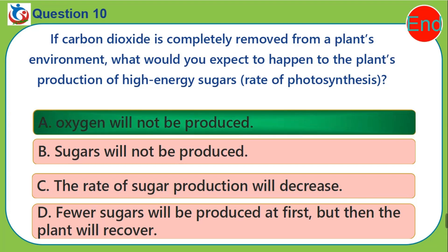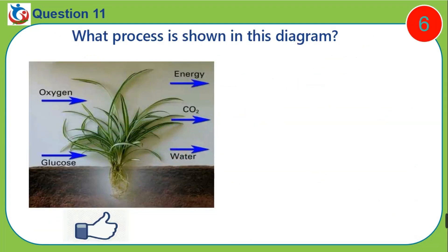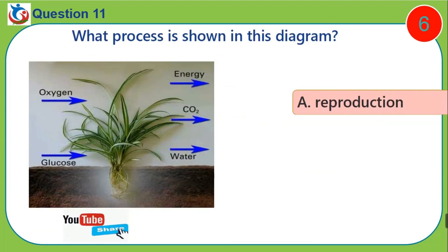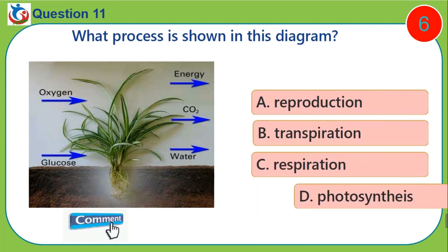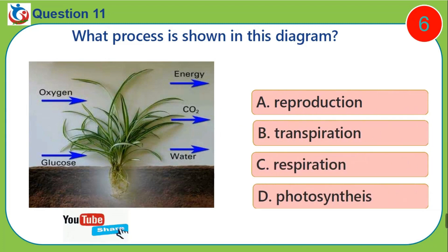Please like this video, subscribe to this channel and click the bell button — it's totally free. Question eleven: What process is shown in this diagram? A) reproduction, B) transpiration, C) respiration, D) photosynthesis.